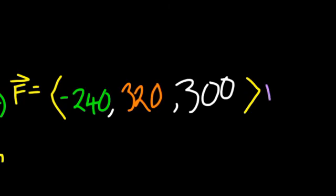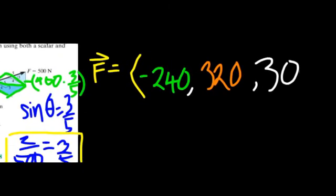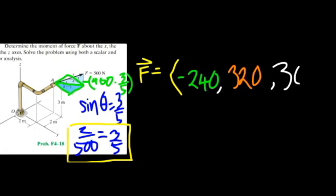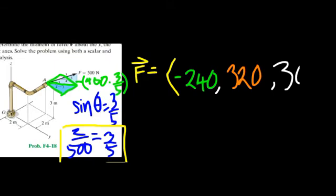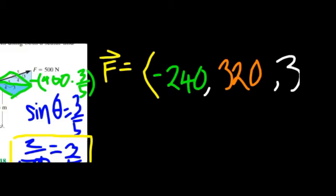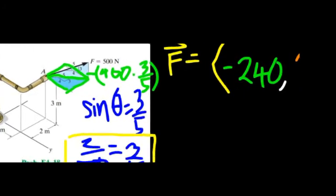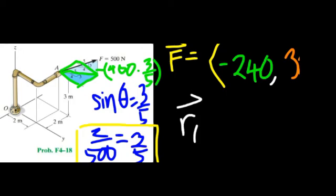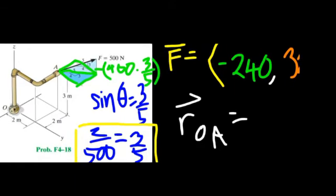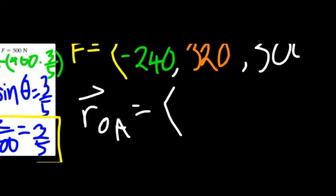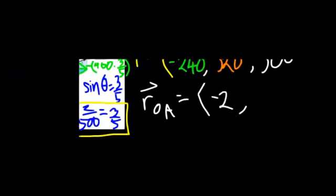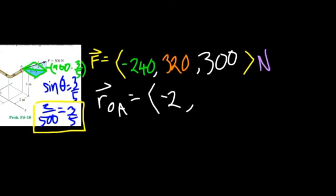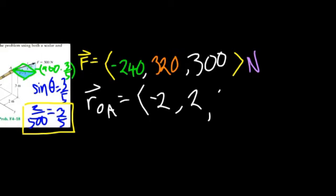The units are Newtons. Now we get the components of R_OA so we can take the cross product. R_OA went left by two meters in the X axis, which is negative two meters; two meters up in the Y axis, so positive two; and three meters up in the Z axis, so three.